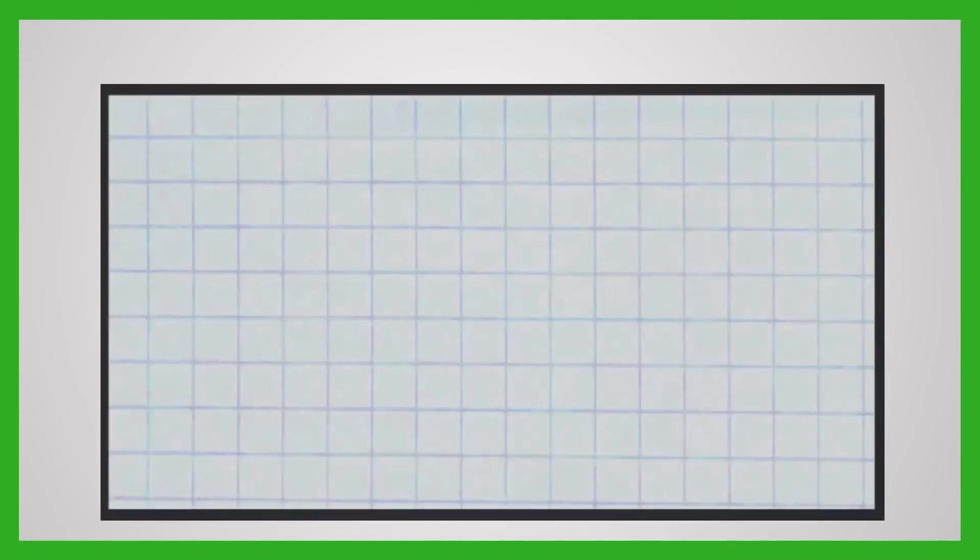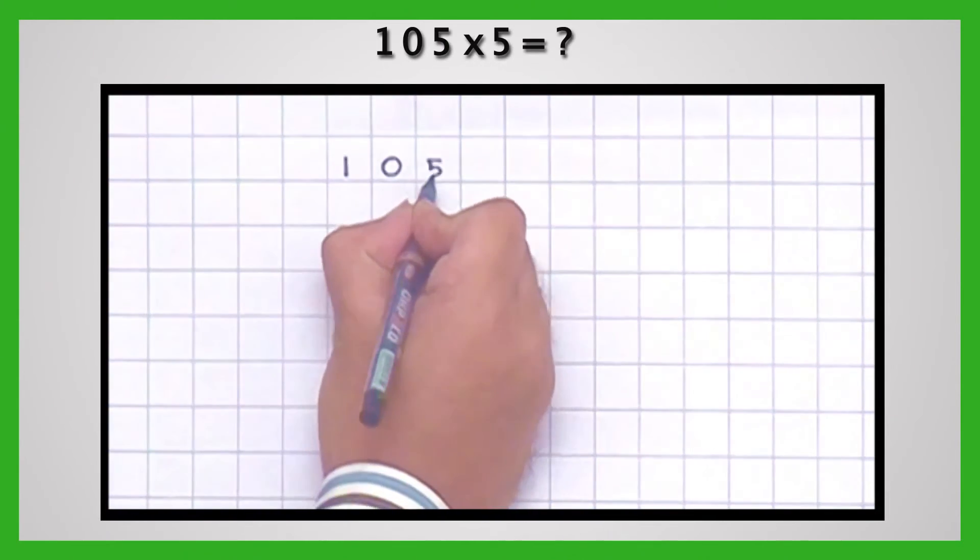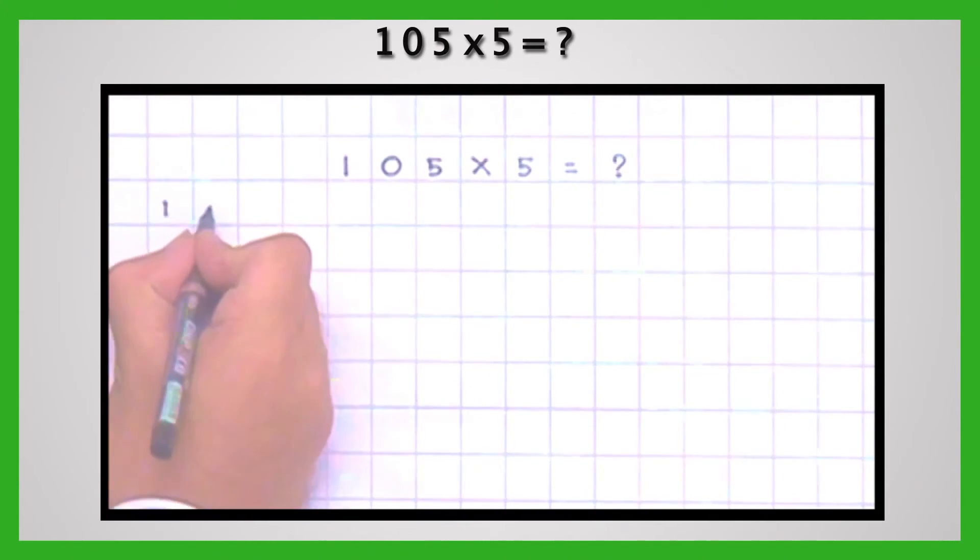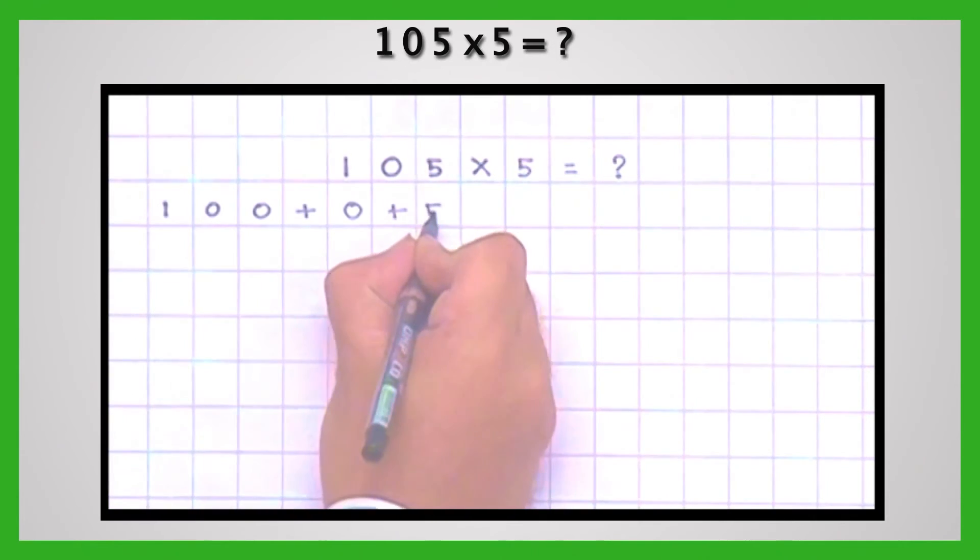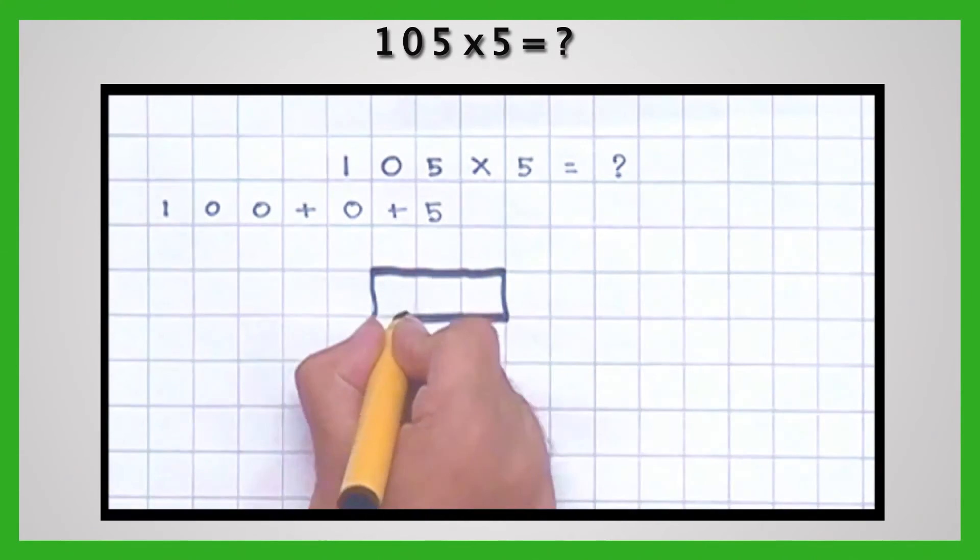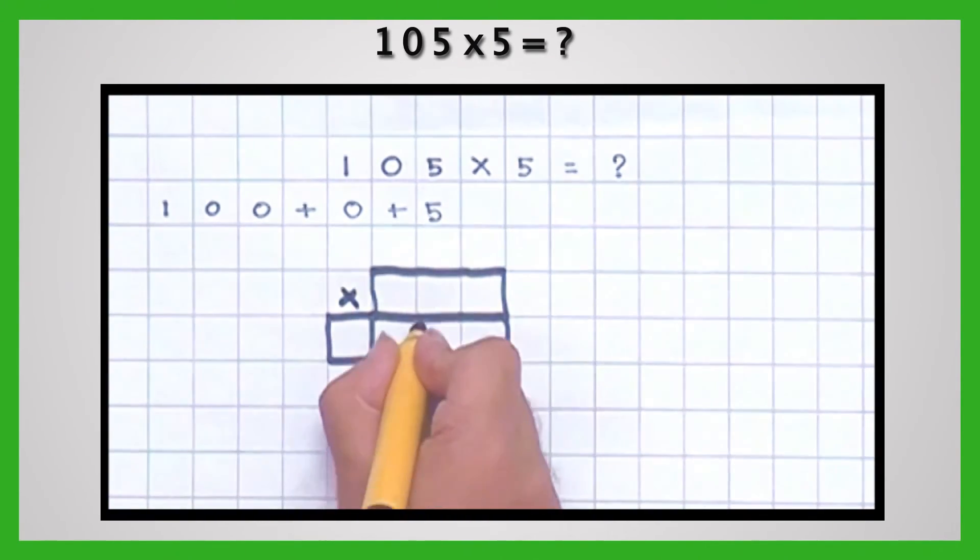The multiplication grid works for a three-digit number. For example, 105 multiplied by 5. The number 105 can be expanded as 100 plus 0 tens plus 5 units. Here, students should keep in mind the rules of multiplying by 0 and 100.